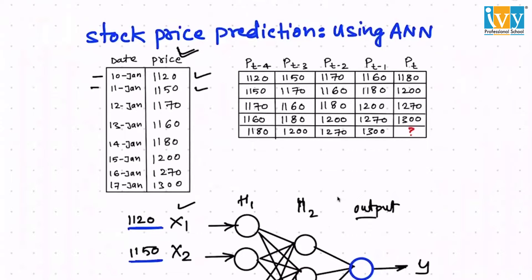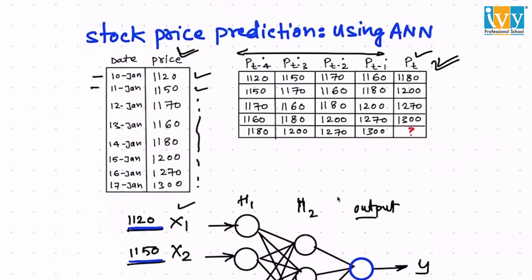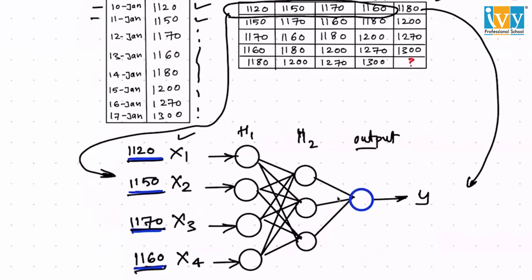You can convert this data into a supervised dataset where price at time t can be predicted based on the price at time t-1, t-2, t-3, t-4. So the algorithm will learn: 1120, 1150, 1070, 1060 as the input row, and 1180 is the output. The prediction will be compared with y, which is 1180. Let's say it predicted 1173, so you compare the error.